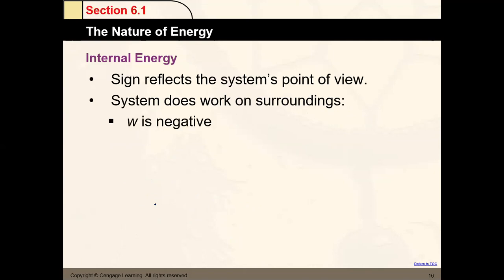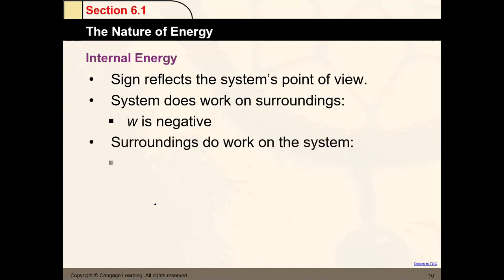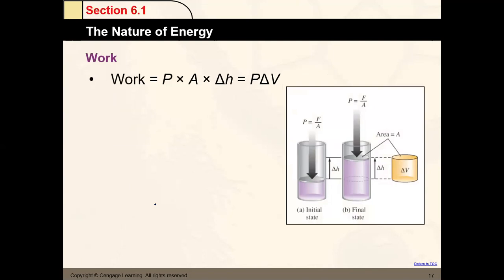For work with the piston example: initial state has the piston with gas; in the final state, the gas expands, pushing the piston to a new height. The formula for work here is W = −P·ΔV, where P is pressure, A is area, and ΔH is the height or distance. ΔV is the change in volume. That expansion creates a distance, and that is the work production.